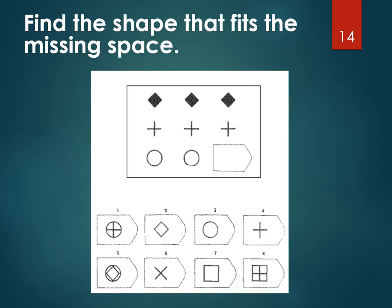We have some shapes here, and I want you to find the shape that's missing. On the first row, we have a diamond, diamond, and diamond. The next row, we have a cross, a cross, and a cross. The third row, we have circle, circle, and what should go in the blank space? Can you point to the correct shape that should go in the blank space? The answer is the circle. Did you point to that one? If you did, you are correct. Very good. Let's go to the next question.